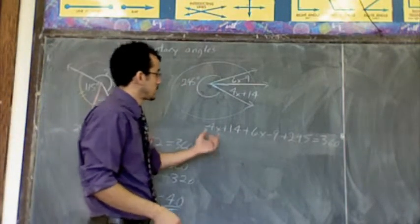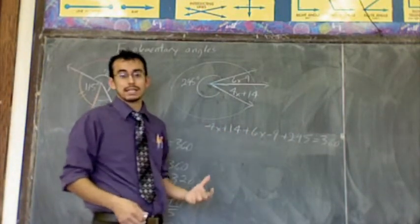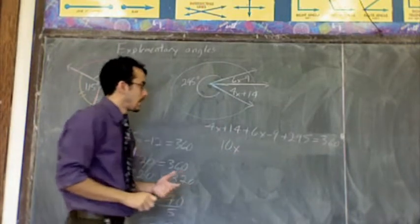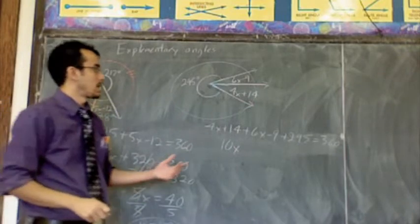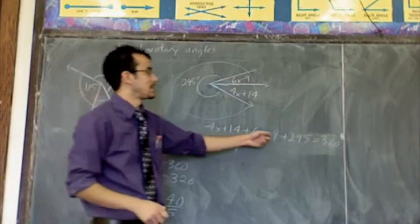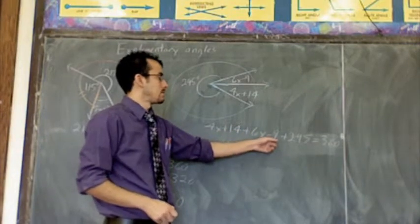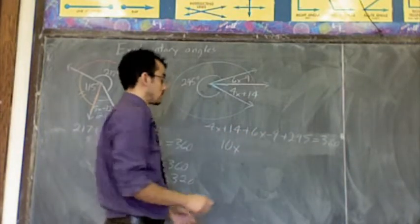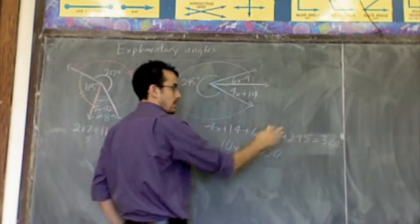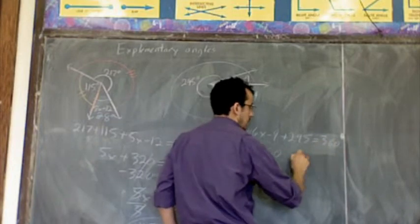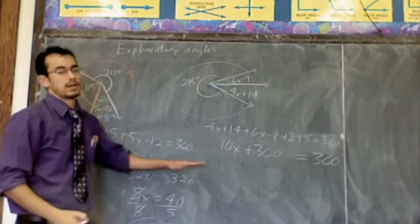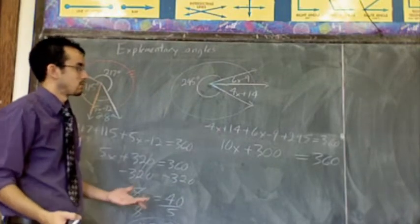But what we are going to do is the same thing we did over here. We're just going to combine like terms and solve for x. So I look through for x's. I see 4x. I see 6x. 4x plus 6x is 10x. And then I'm going to combine like constants. I see positive 14, negative 9, positive 295. 14 minus 9, that's 5. 5 plus 295, that's 300. So I've got 10x plus 300. Equals 360. And then again, every single time, we're going to get to a two-step equation.